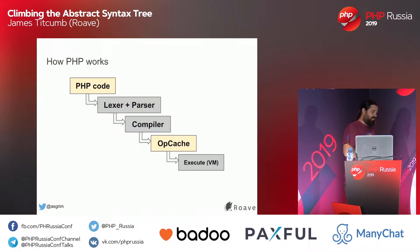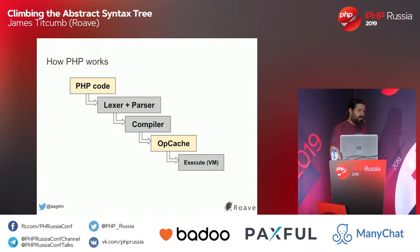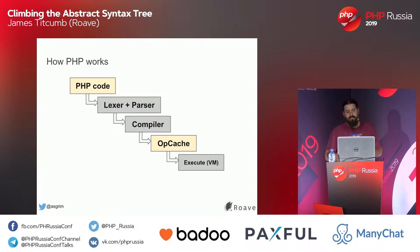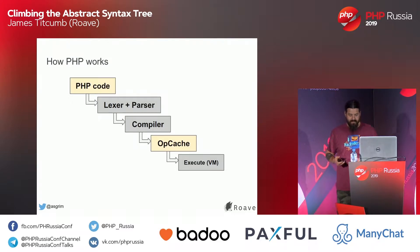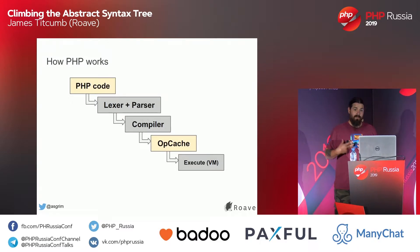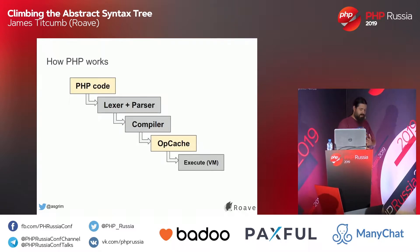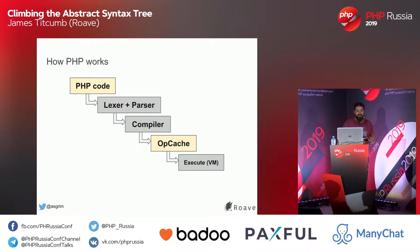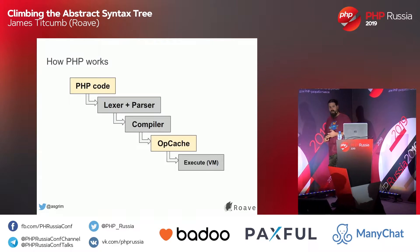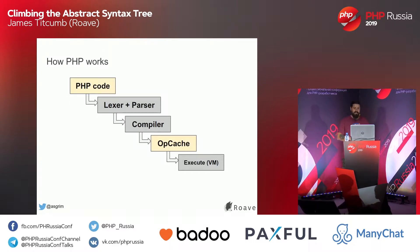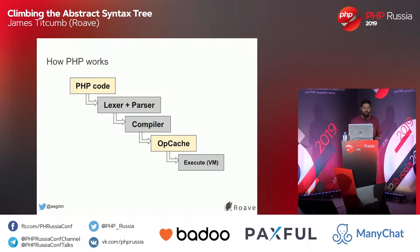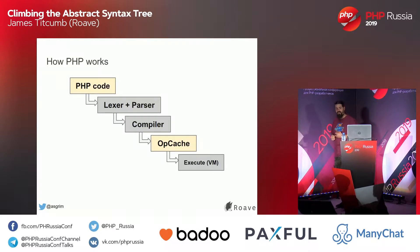To understand about static analysis, we need to know how PHP works. So I'll give you a quick overview of how PHP works and how the PHP code is fed into the lexer, which generates tokens. Tokens are fed into a parser, which results in an AST. The AST is compiled by the compiler, which generates opcodes. The opcodes are stored in the opcache and executed in a virtual machine.